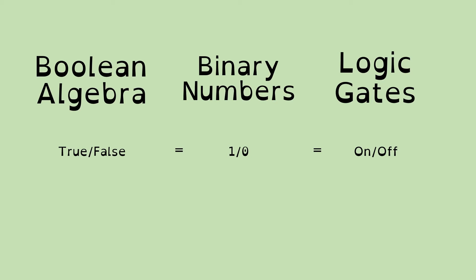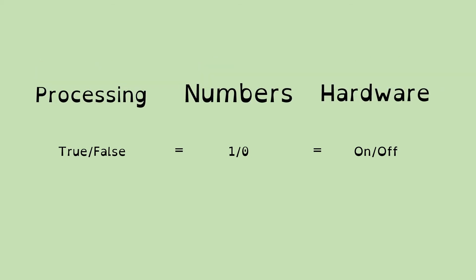They're not entirely interchangeable, but logic gates can be used to combine the principles of Boolean algebra and binary numbers to give us certain effects in our electronics. Boolean algebra gives us processing. Binary numbers gives us numbers. And the logic gates gives us hardware.